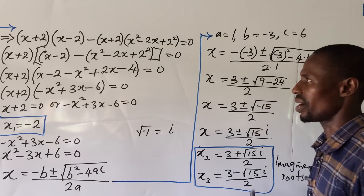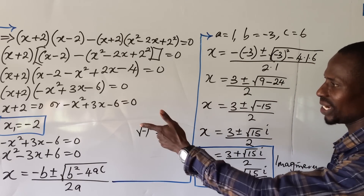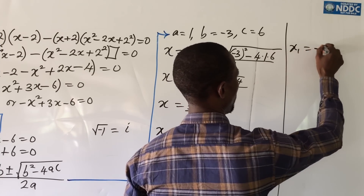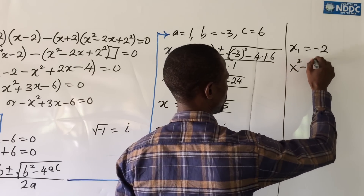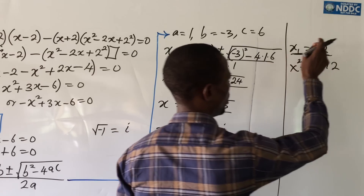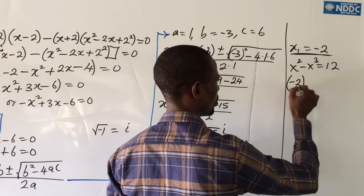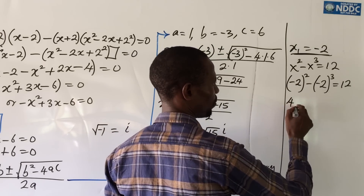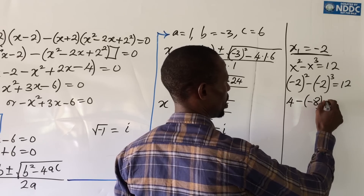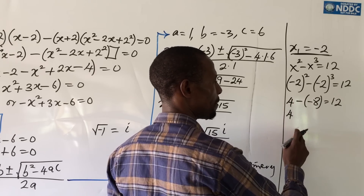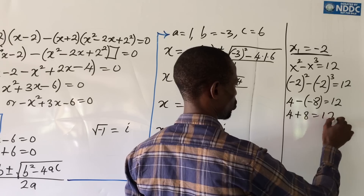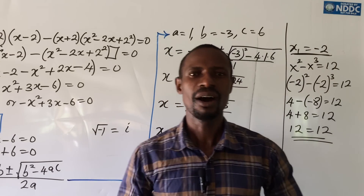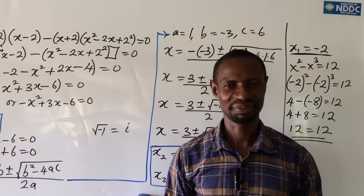We can check if our answer is correct. Plugging in the first root, x₁ equals minus 2, into x squared minus x cubed equals 12: we get bracket minus 2 squared, minus bracket minus 2 cubed, which gives positive 4 minus negative 8, giving us 4 plus 8 equals 12. And 12 equals 12 — correct, as simple as ABC. That marks the end of this mathematical challenge.